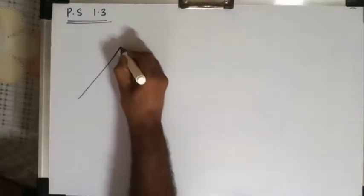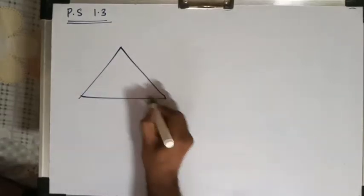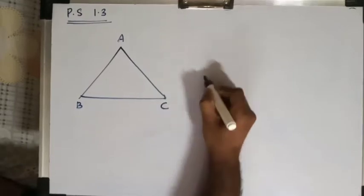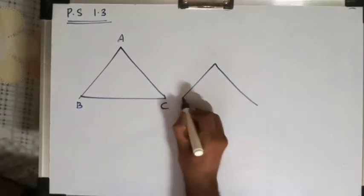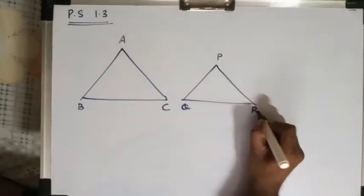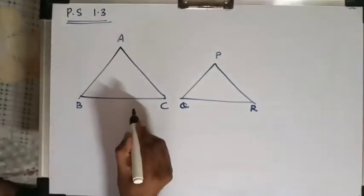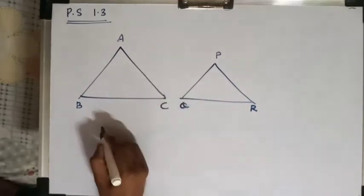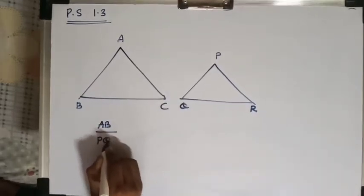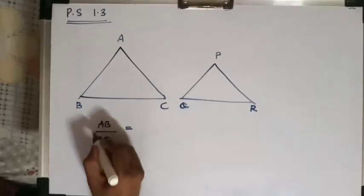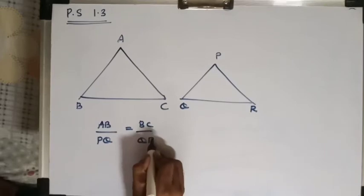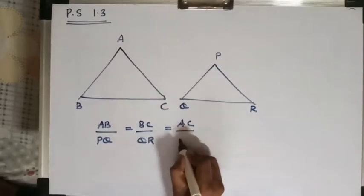Say if there is a triangle ABC and another triangle PQR, and both of these triangles have their sides in proportion: AB upon PQ equals BC upon QR, which in turn equals AC upon PR.